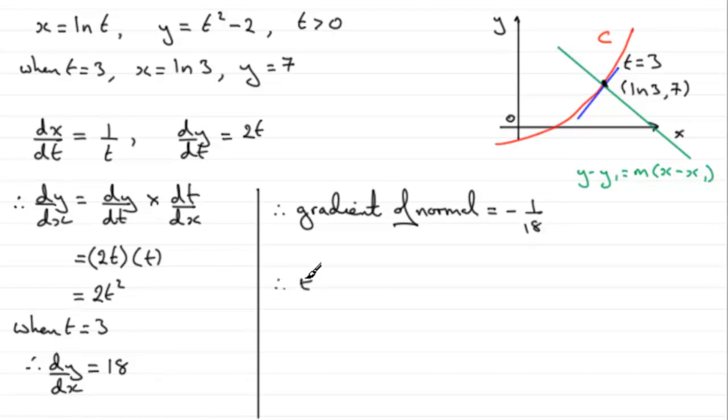we're now in a position to state the equation of that normal. So therefore, the equation of the normal is, and then we just have to drop down here and say that it is y minus y1, y1 being the 7, equals m, the gradient is minus 1 over 18, and then x minus x1, x1 being the natural log of 3.